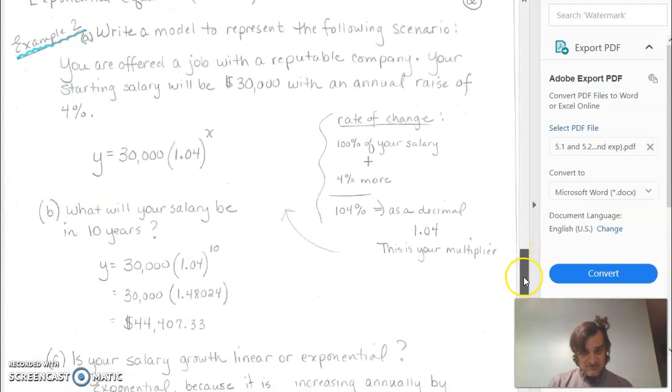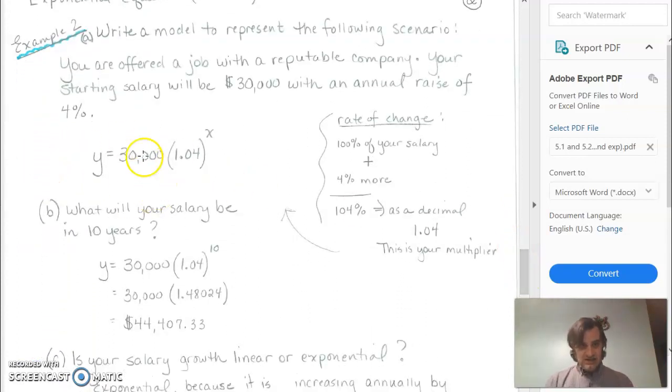Here's another model that we can go through really quick. It says you're offered a job with a reputable company. Your starting salary will be $30,000 with an annual raise of 4%. So once again, we're putting 4% on each time. So 4% is not the same every year. It's the same percentage, but it's not the same dollar amount.